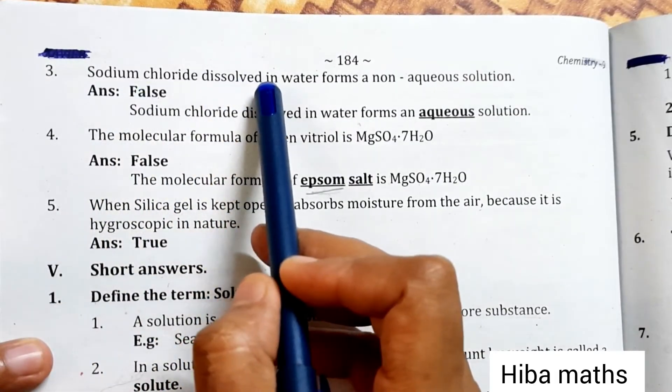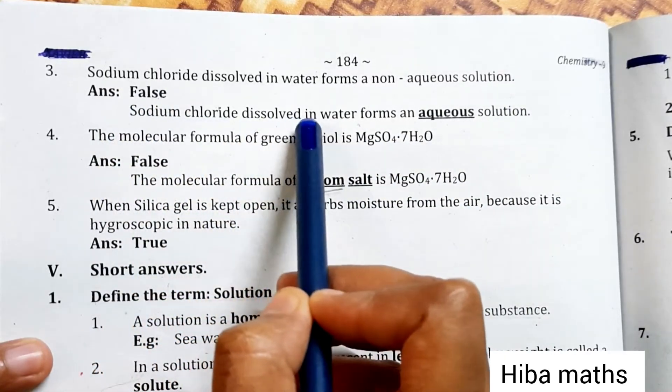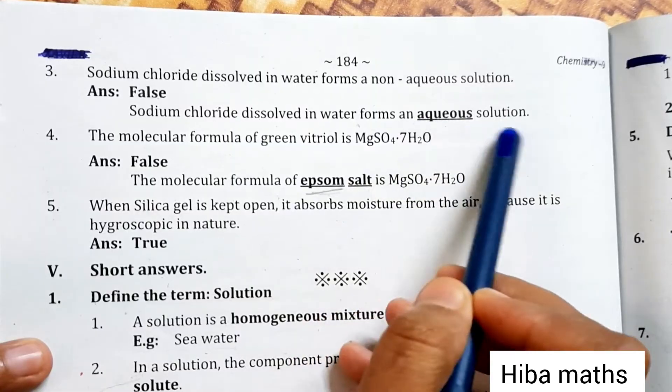Sodium chloride dissolved in water forms a non-aqueous solution. False. Sodium chloride dissolved in water forms an aqueous solution.